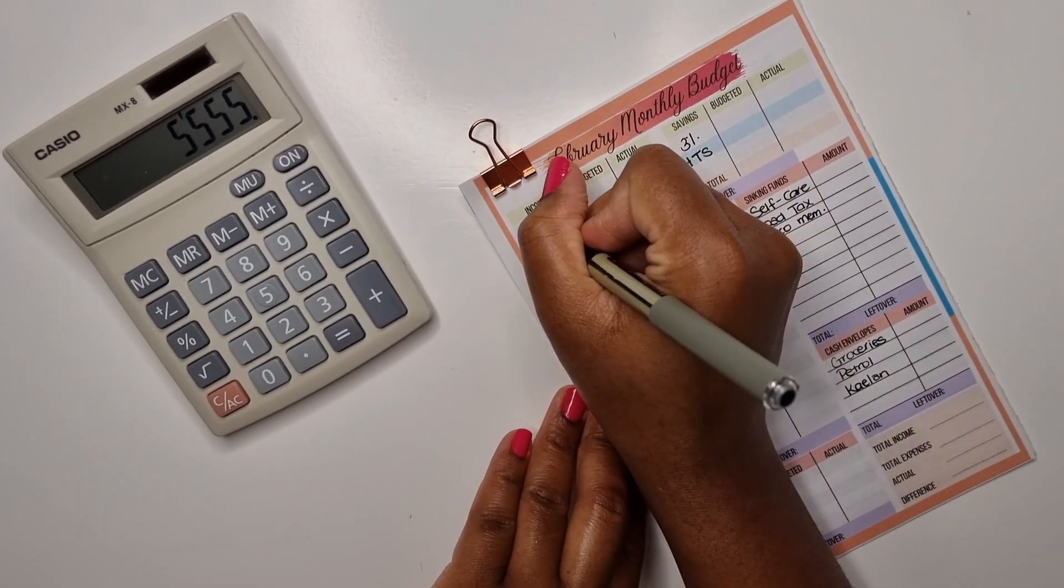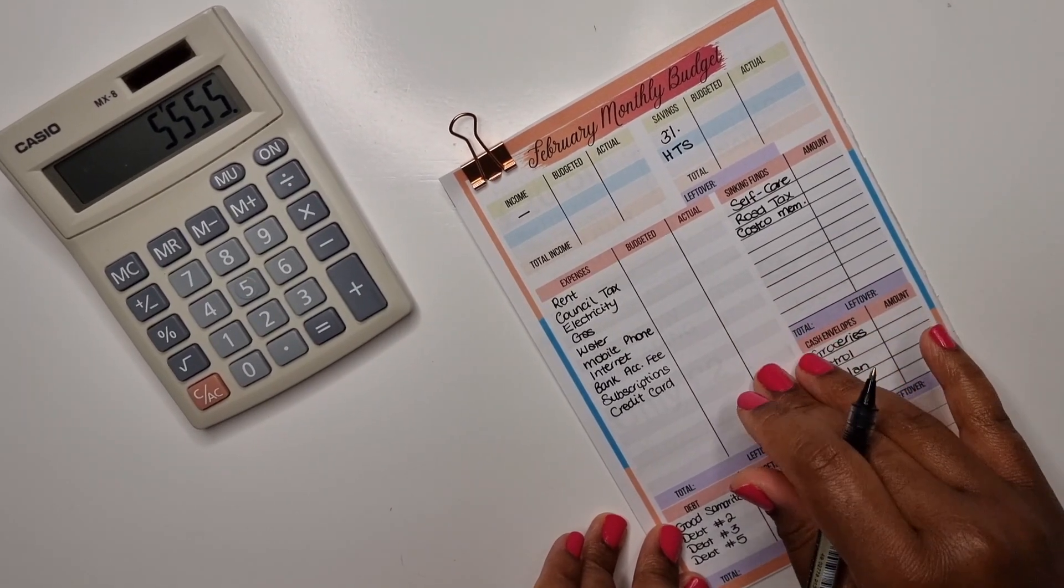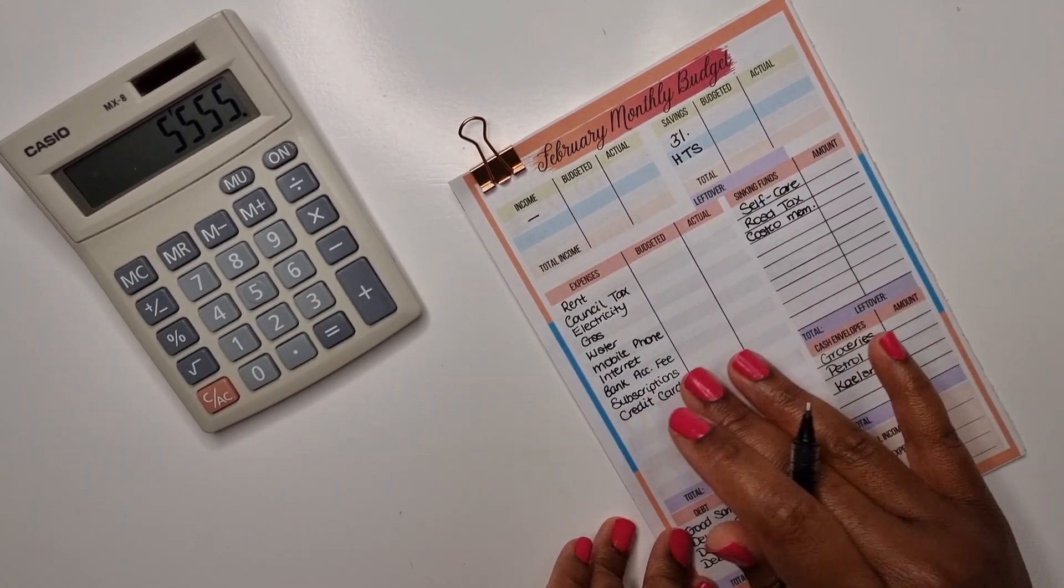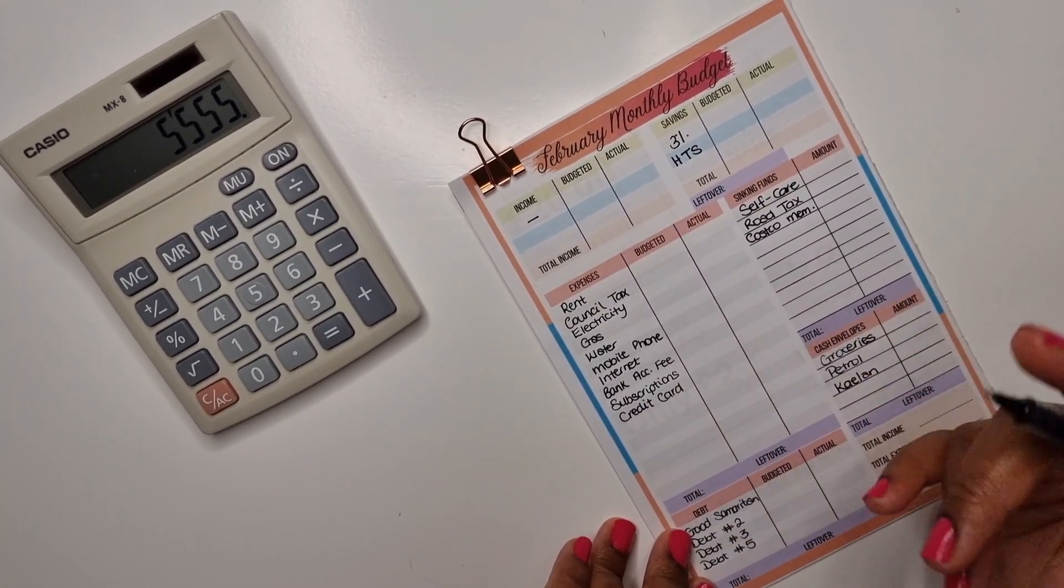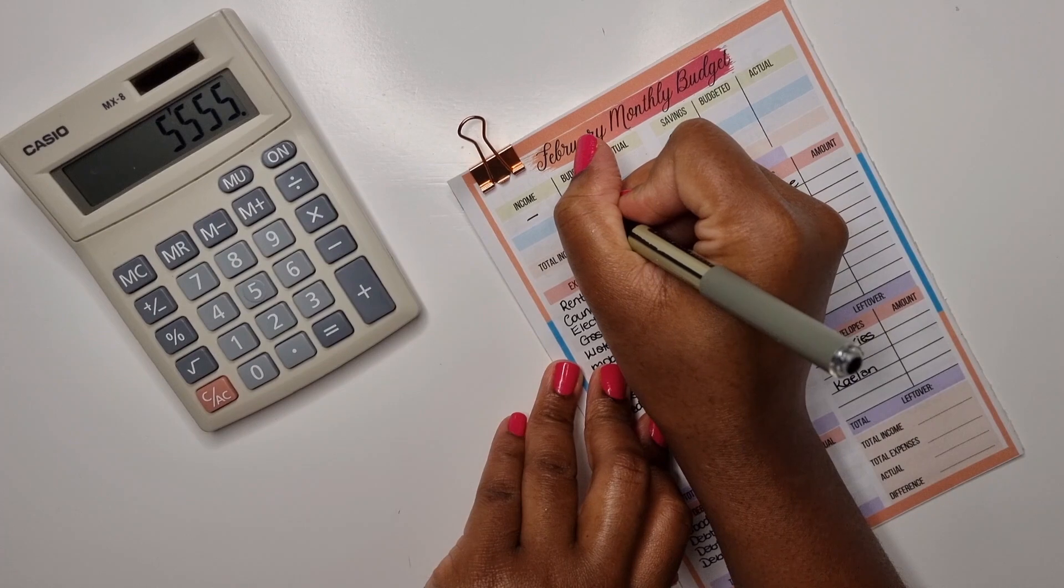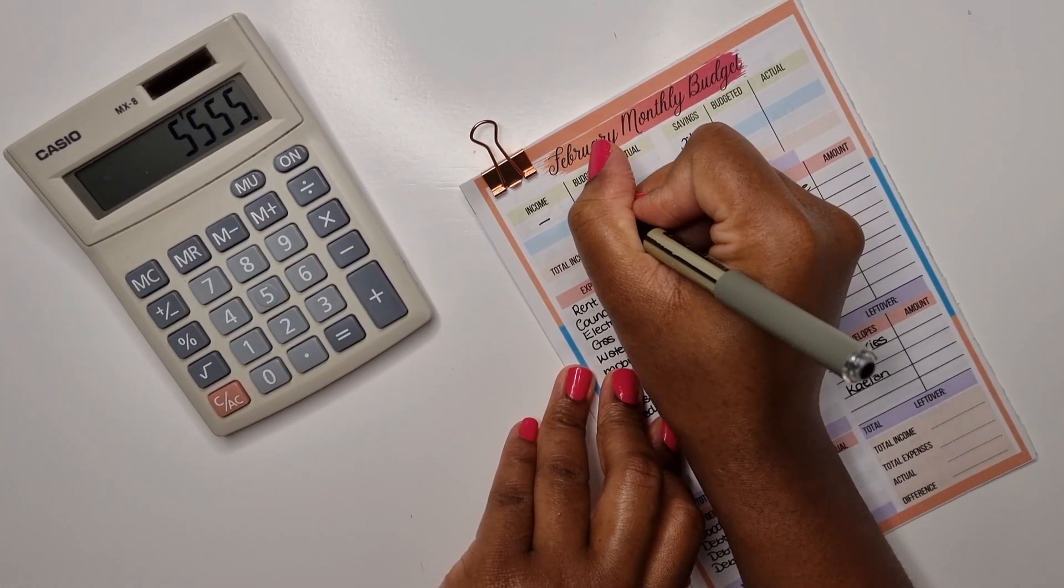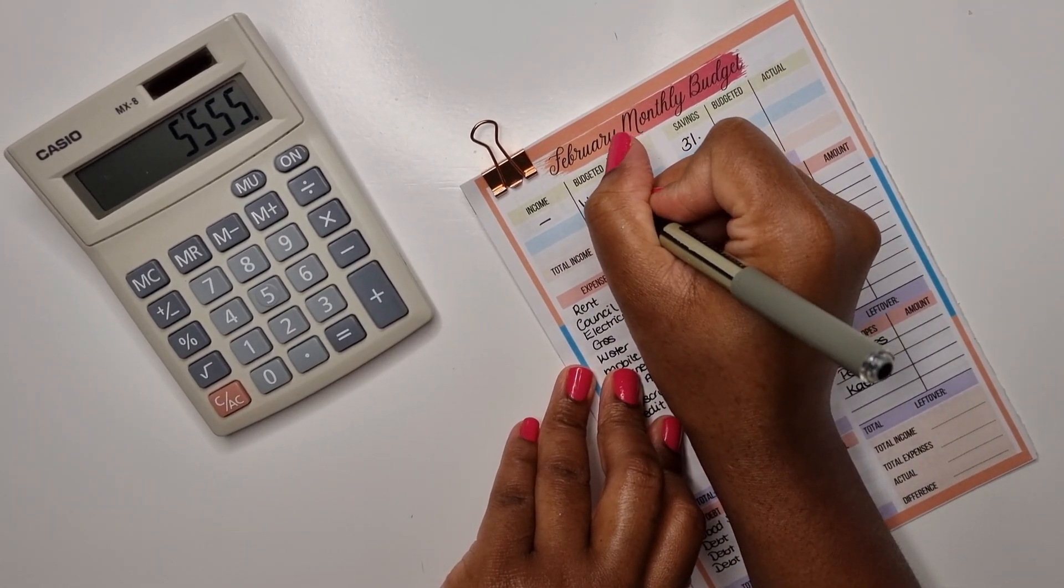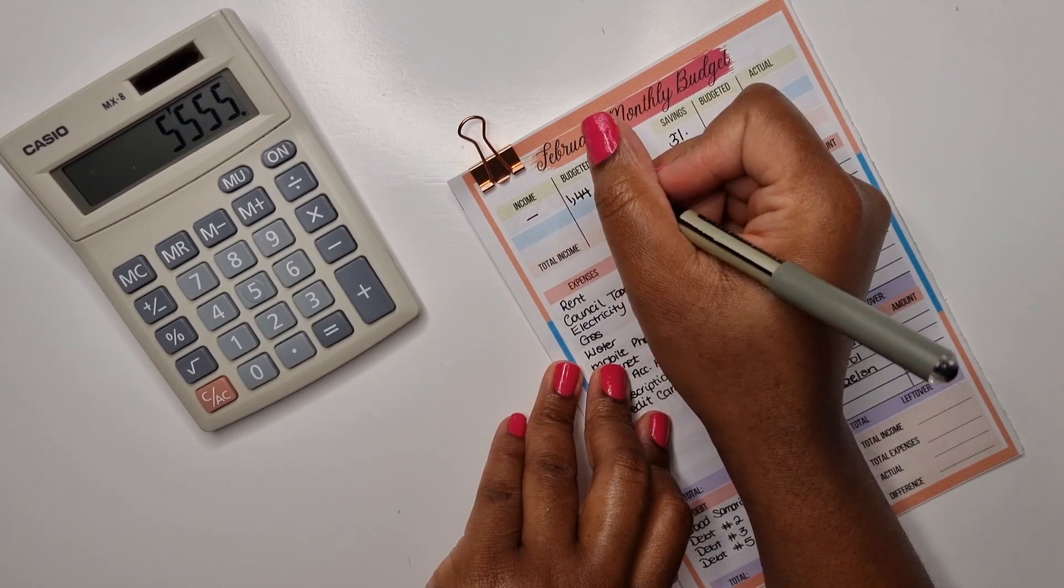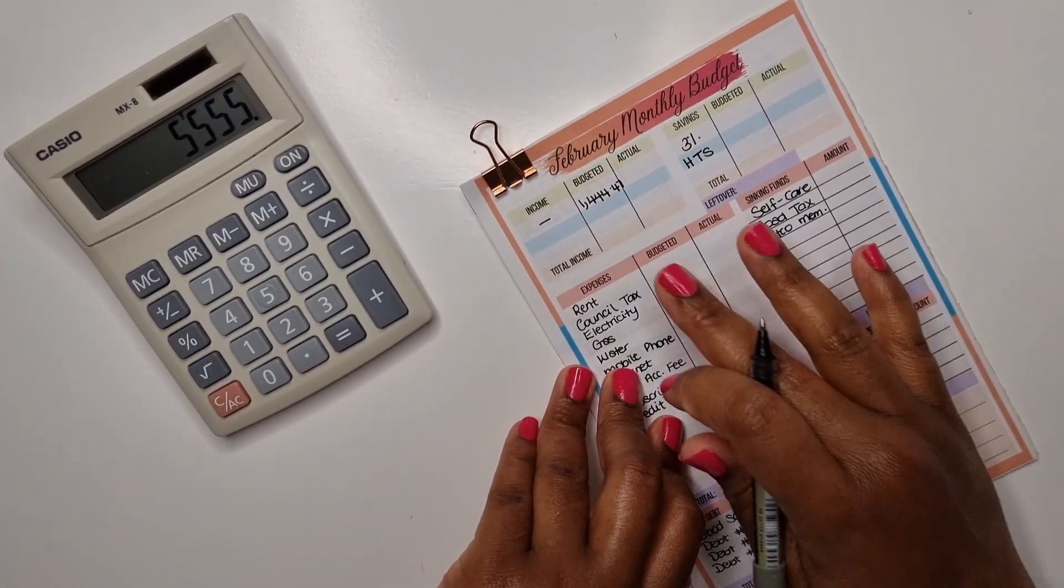For my income, I never really fill in the main income as separate items because that's a combination of child maintenance, child tax credits, working tax credits, child benefit, and my wages. I never really break that down because I just feel like there's no need to. The amount is actually the same as it would be, so that is one thousand four hundred and forty-four pounds forty-seven pence.